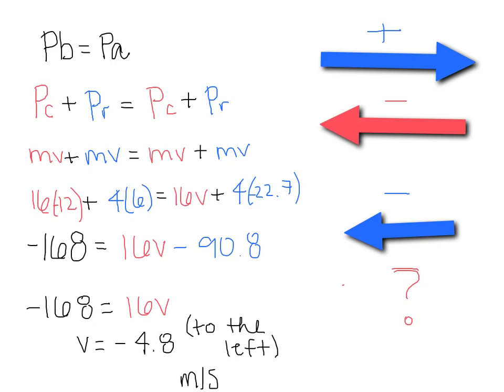Negative 168 equals 16v minus 90.8. Solving this, negative 168 equals 16v, and v equals negative 4.8 meters per second.